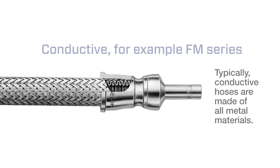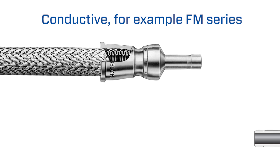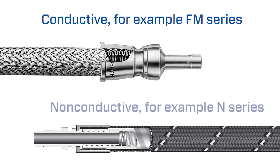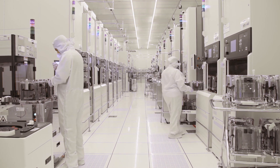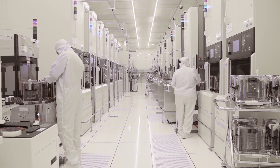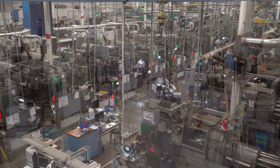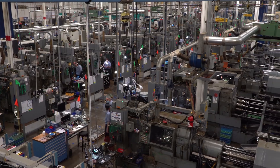Typically, conductive hoses are made of all metal materials. Certain applications may require a hose to be either conductive or non-conductive. For example, most semiconductor processes would use a non-conductive hose, while a general industrial setting would use a conductive hose.